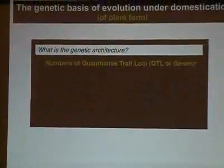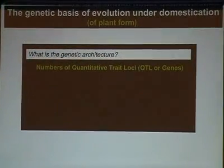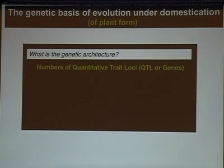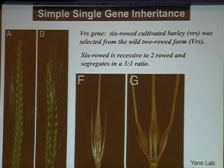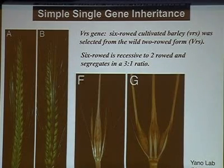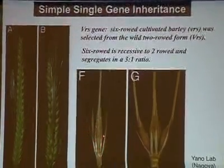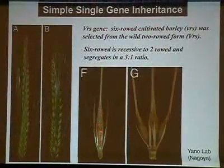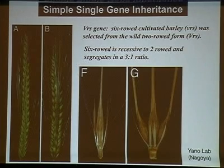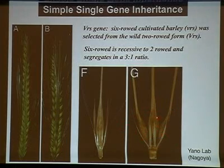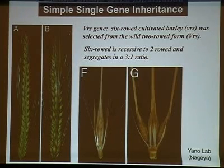The middle part of my talk covers what we've learned about the genetic architecture of morphological changes during domestication, starting with how many genes it takes. In many cases we find simple single-gene inheritance. A wonderful case is barley: a single recessive mutation switches from the wild barley's single fertile spikelet with two sterile spikelets on either side to the more common domesticated phenotype where the two lateral spikelets are restored to fertility, tripling the grain number in the inflorescence.